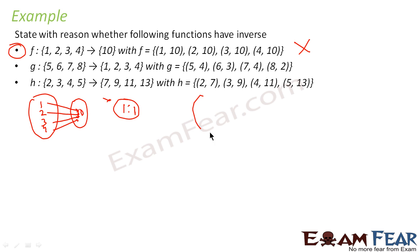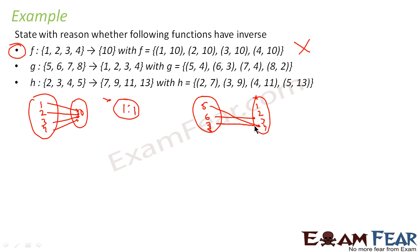Let us take g. g maps {5, 6, 7, 8} to {1, 2, 3, 4}. 5 goes to 4, 6 goes to 3, 7 goes again to 4, and 8 goes to 2. Here also, 4 has two pointers coming in, and 1 is an orphan element. So it is not onto, and it is not even one-to-one. So this function is also not invertible.